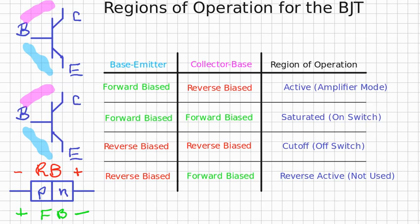Let's remind ourselves what it means to be forward or reverse biased. See the PN junction in the lower left. It is forward biased if the externally applied voltage leaves the P more positive than the N, and reverse biased if the opposite occurs.